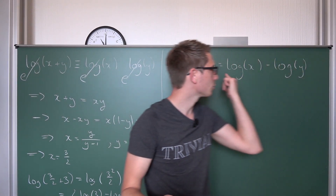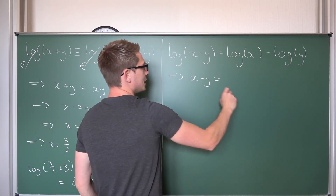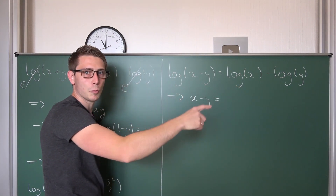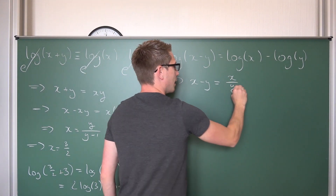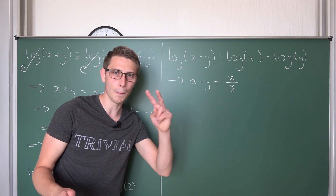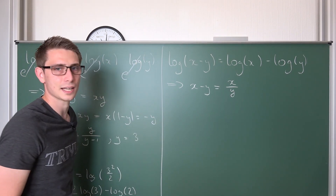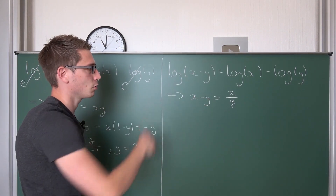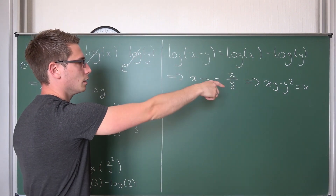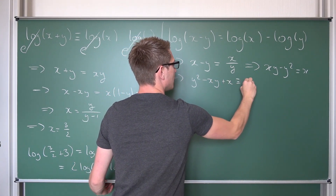Now we are going to dive right in with the second one. We use base e on both sides, giving us x - y on the left. If we use the logarithm rules here we get log(x/y) on the right side, and applying base e on both sides gives us x/y. Multiplying both sides by y (under the condition that y ≠ 0), we get xy - y² = x. Bringing everything to one side leaves us with y² - xy + x = 0.